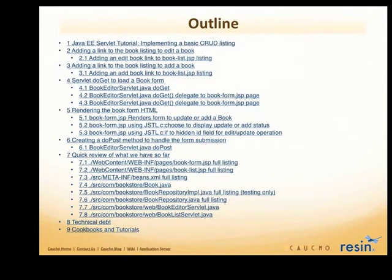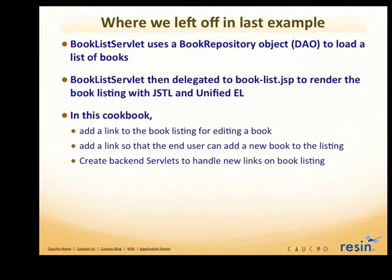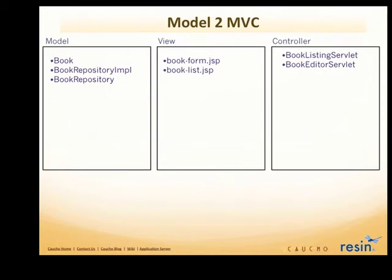This is the outline for this cookbook. Where we left off in the last example, we just had a book list servlet and a book repository. We're now showing examples using a classic MVC architecture. The model is the book, the book repository implementation, and the book repository interface. The view is the book form JSP and the book list JSP. And then you have controllers — the book listing servlet and the book editor servlet. In the last cookbook, we didn't have book form JSP or book editor servlet — those are the things we're going to add.